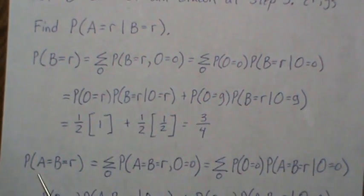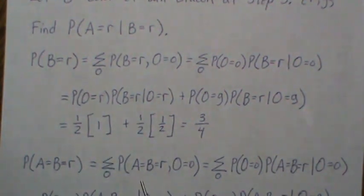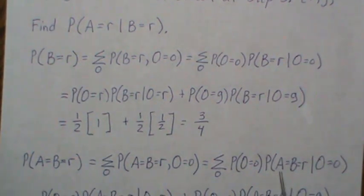The probability that A is red and B is red, we use a similar approach. We introduce another variable and sum over all possible values. This can be written in conditional probability.